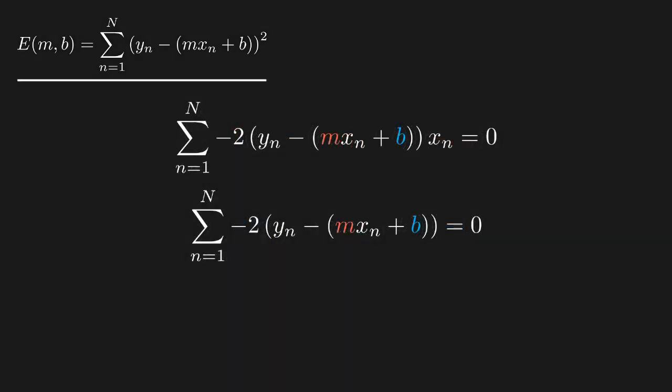After setting these derivatives equal to 0, we have two equations with two unknowns. Furthermore, the equations are linear in the coefficients m and b. This is actually what we mean by linear least squares.